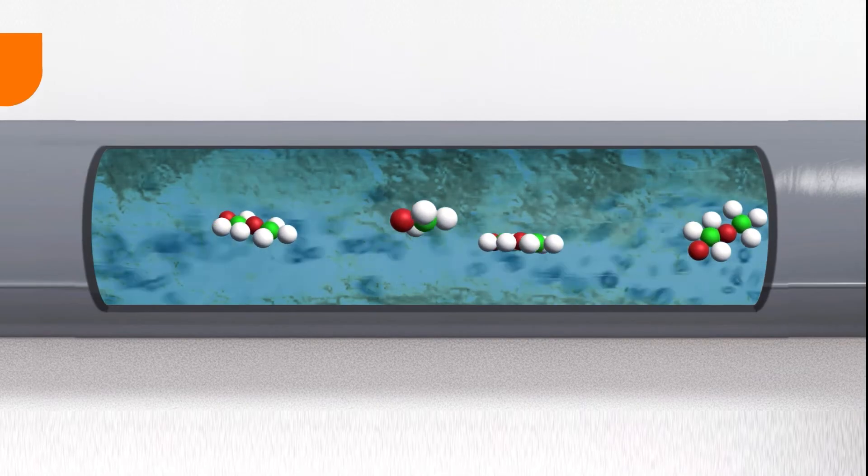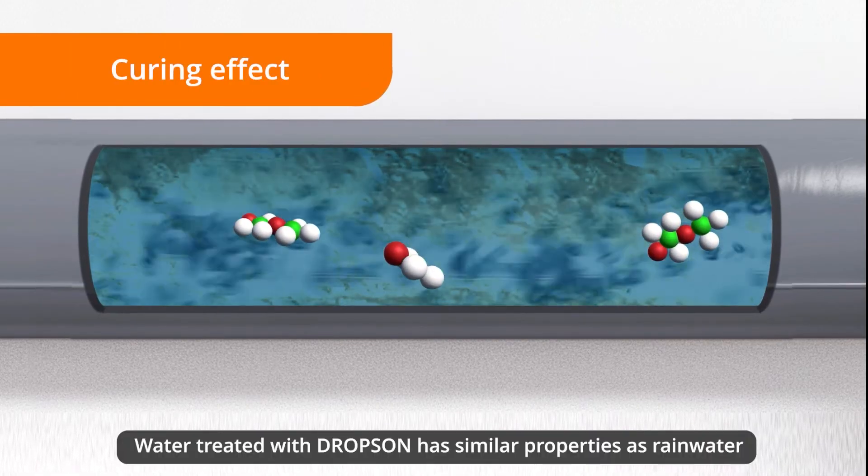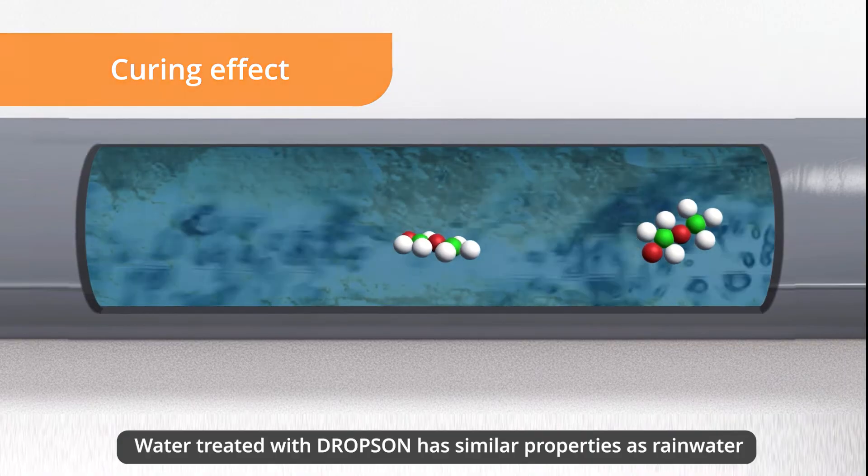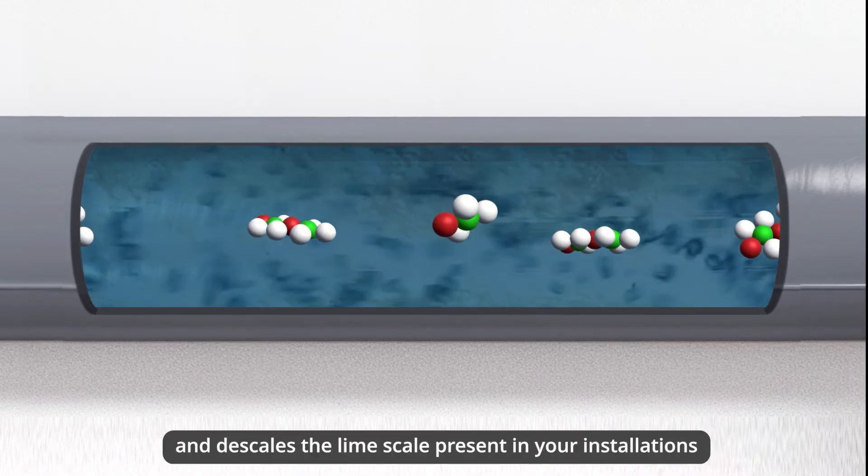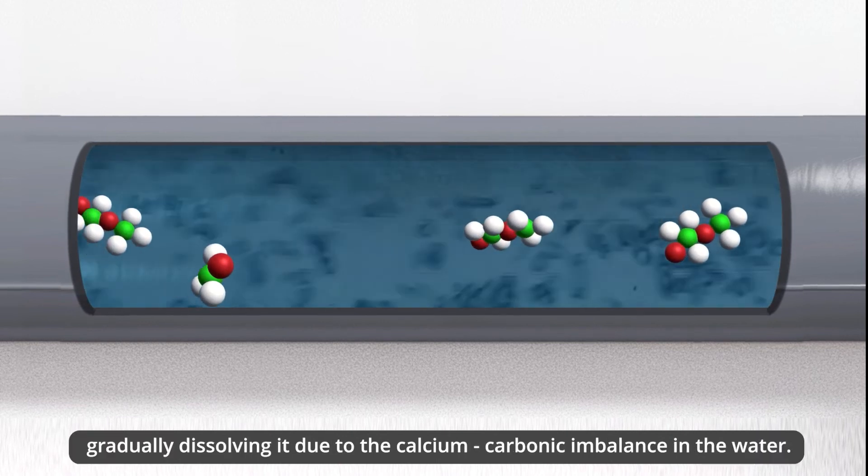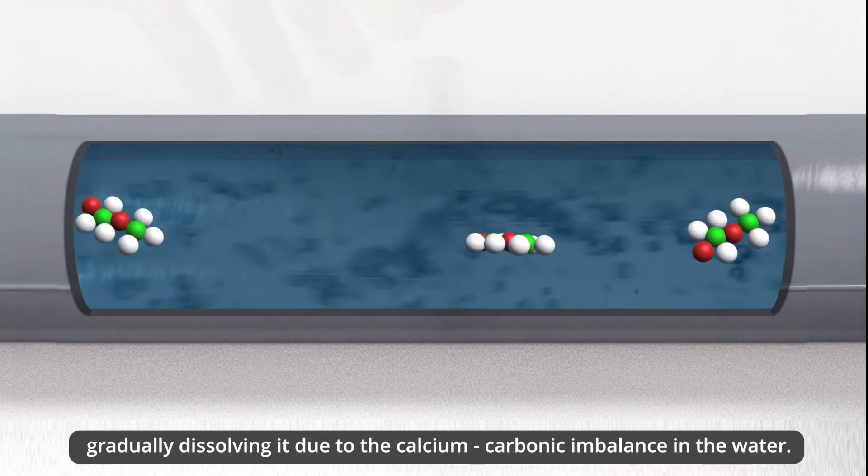Dropson also has a curing effect. Water treated with Dropson has similar properties to rainwater and descales the limescale present in your installations, gradually dissolving it due to the calcium-carbonic imbalance in the water.